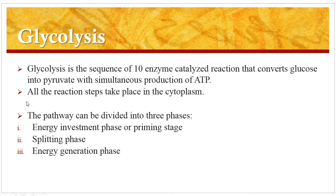The pathway also includes the formation of lactate from pyruvate and it is the central pathway for glucose catabolism. In aerobic organisms, glycolysis is the preliminary pathway of the citric acid cycle and ETC chain. The pathway can be divided into 3 phases: the first is the energy investment or priming stage, the second is the splitting phase, and the third is the energy generation phase.